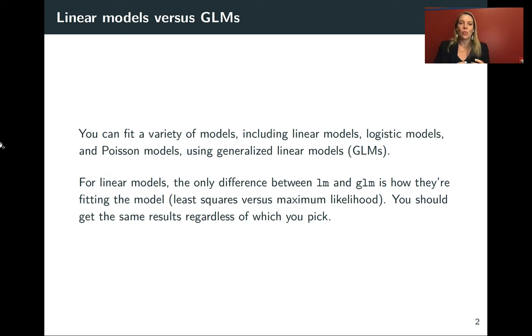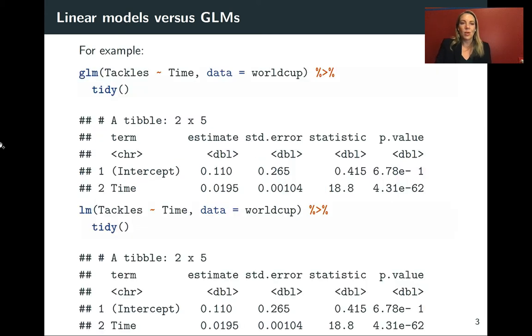In this case, it's doing a very similar idea. It's just using a different algorithm for fitting those. So it uses least squares for the linear model with LM and it's using maximum likelihood with GLM. Now it turns out that those will give you the exact same estimates regardless of which you pick.